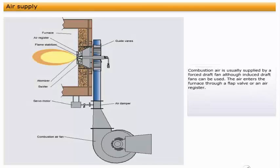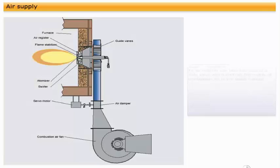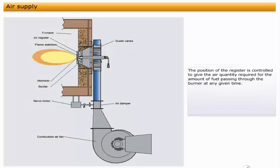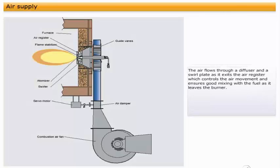Combustion air is usually supplied by a forced draft fan, although induced draft fans can be used. The air enters the furnace through a flap valve or an air register. An air register can take the form of a slide valve, which controls the supply of combustion air to the boiler furnace. The position of the register is controlled to give the air quantity required for the amount of fuel passing through the burner at any given time.